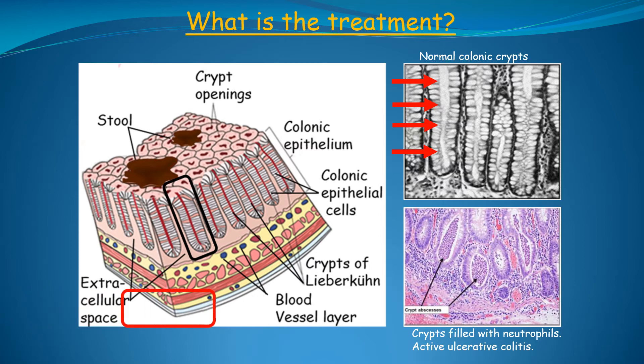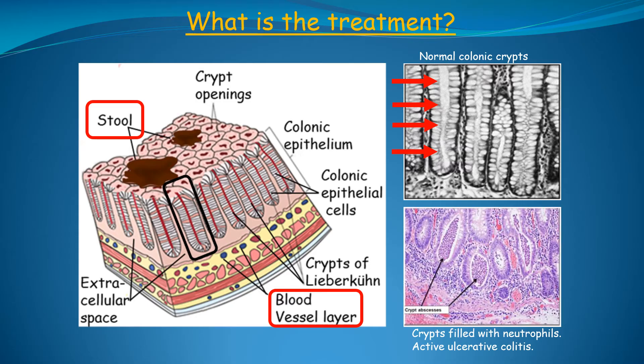Take note that the blood vessels containing the neutrophils are just below the crypts, while the stool containing very high concentrations of bacteria is just above on the inner surface of the colon. This close relationship is important for the development of ulcerative colitis, as we shall see in the next slide when we zoom in on a single crypt and discuss the evidence-based treatment.